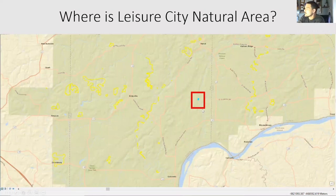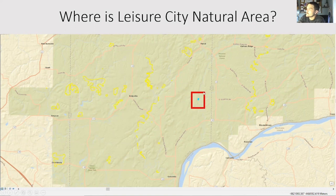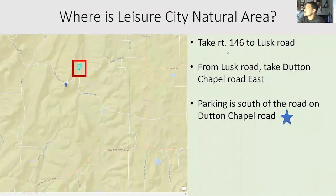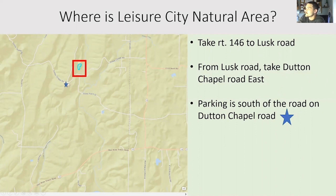Leisure City is just north of Golconda in Pope County, off of Route 146. You can take Lust Creek Road — shown circled in red — with the natural area highlighted in blue. To get there, take Route 146 up to Lust Creek Road, go north for a bit, then west, then north, and you'll hit Dutton Chapel Road. There's a star marking an old church parking lot where you'll want to park and walk the road up to the natural area.